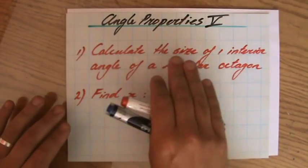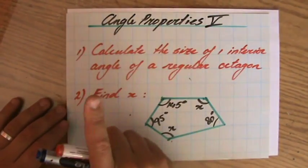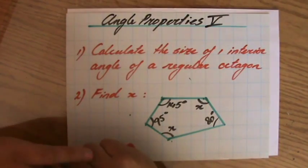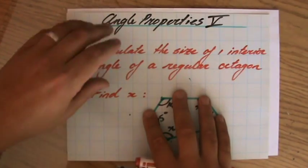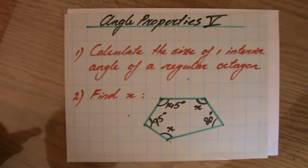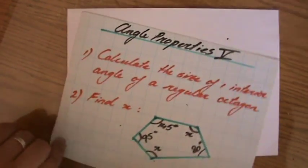The first one: calculate the size of one interior angle of a regular octagon. And then the second question is, find x, the size of x. So we're going to deal with that one in a minute. First question one, the size of one interior angle of a regular octagon.